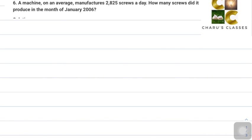Hello students, welcome to Charu's Classes. Let's start with question number 6, Exercise 1.2, Knowing Our Numbers. A machine on average manufactures 2,825 screws a day. How many screws did it produce in the month of January 2006?